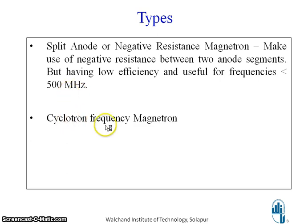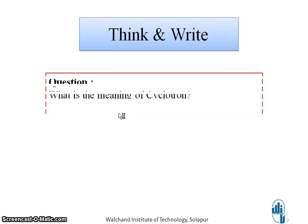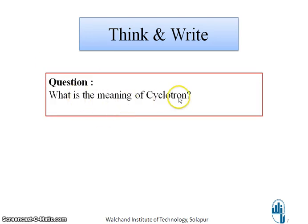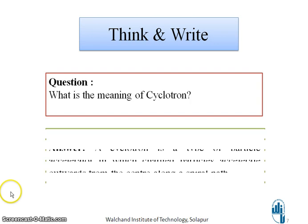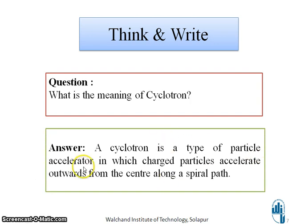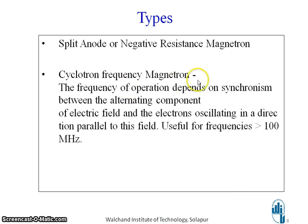The second type is the cyclotron frequency magnetron. A cyclotron is a type of particle accelerator in which charged particles accelerate outward from the center along a spiral path. The cyclotron frequency magnetron depends on the synchronism between the alternating component of electric field and electrons oscillating in a direction parallel to this field. It is useful for frequencies greater than 100 MHz.